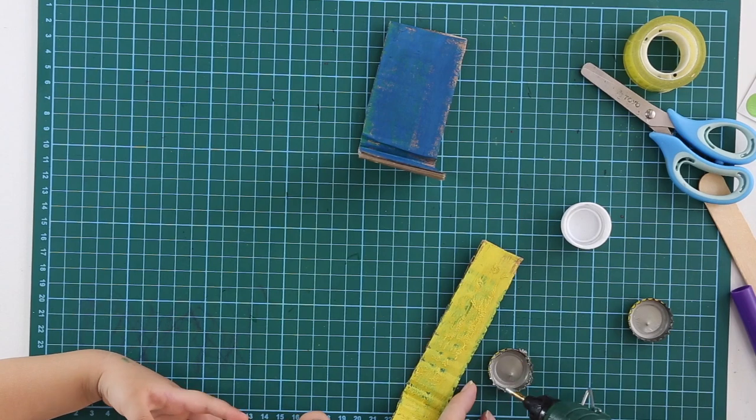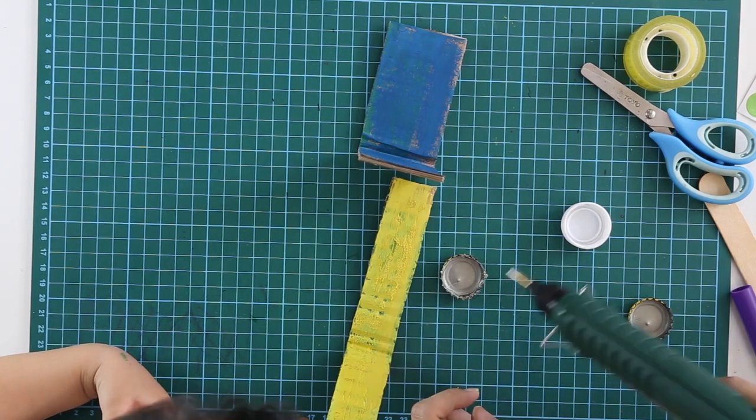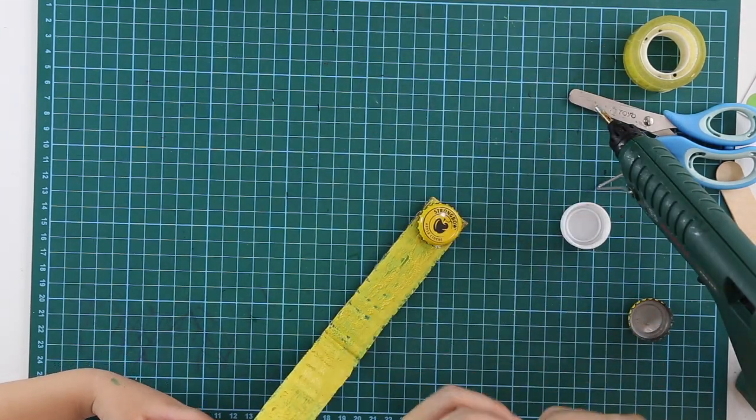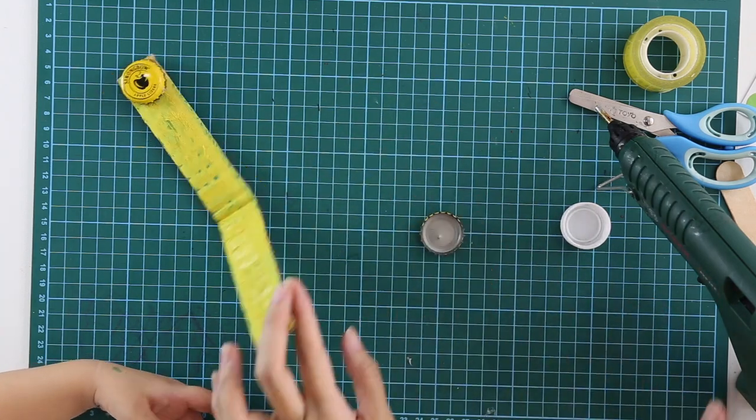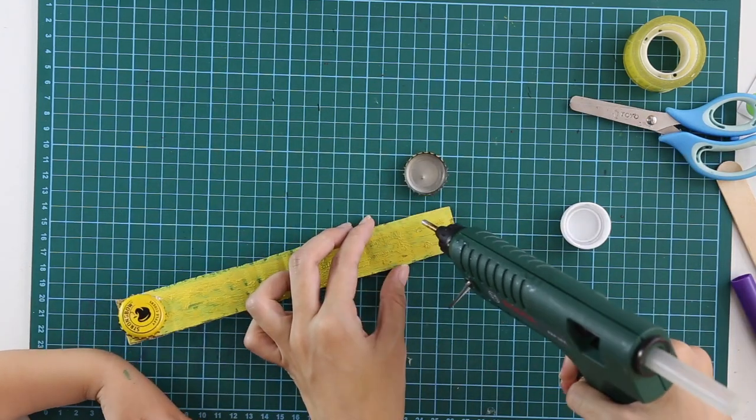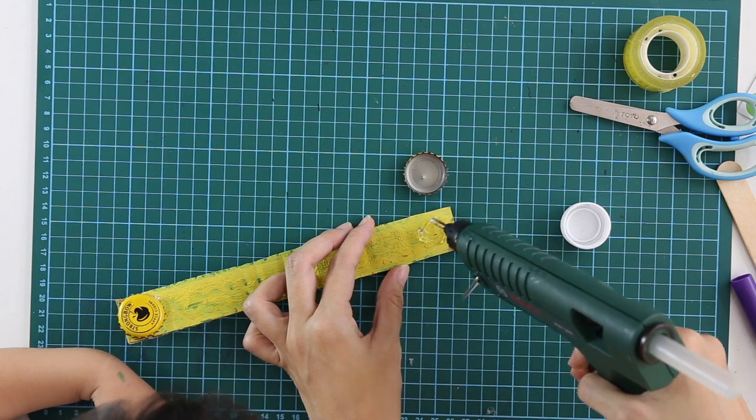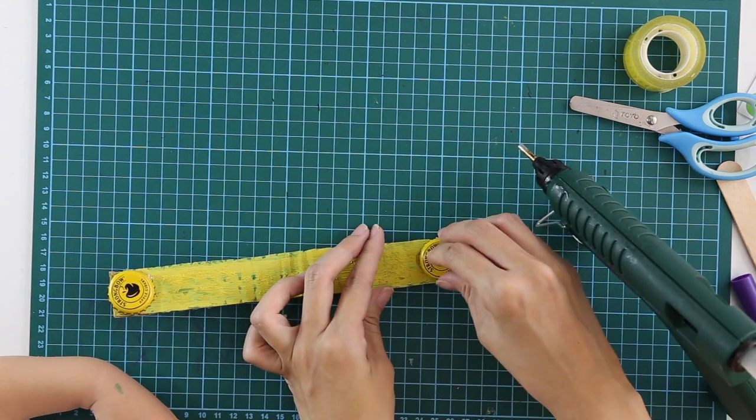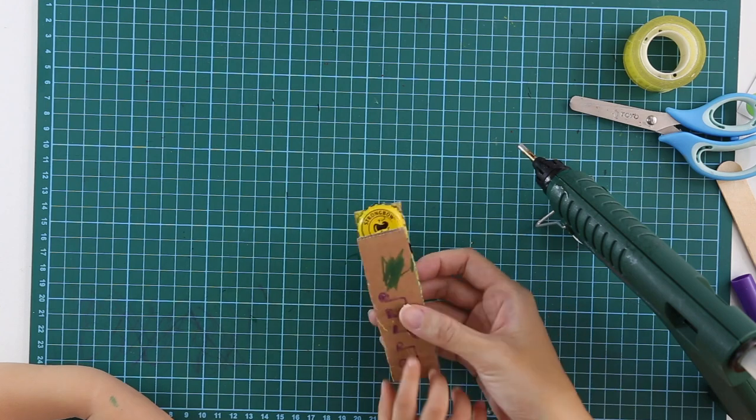So we are using hot glue gun. You can put the glue directly on the cap and then put it on gently. Press it down and hold on for a while. Or you can put your glue on the cardboard itself and press it on.